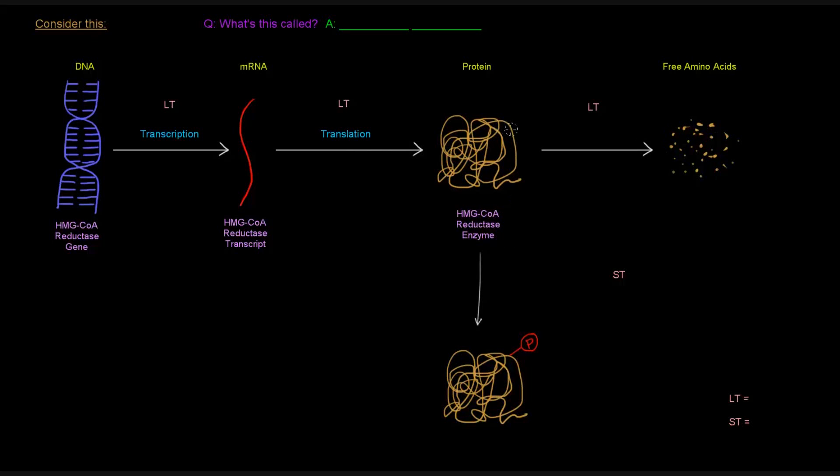Now, that protein, of course, can be degraded via proteolysis to give just a bunch of free amino acids. Now, this enzyme here can do its thing. That's what we're really talking about when we're talking about this thing being able to catalyze the reaction that we just mentioned. Now, this enzyme can be covalently modified via phosphorylation to give the HMG-CoA reductase enzyme with a phosphate group on it. Now, all these different things contribute to what's going on with this enzyme.